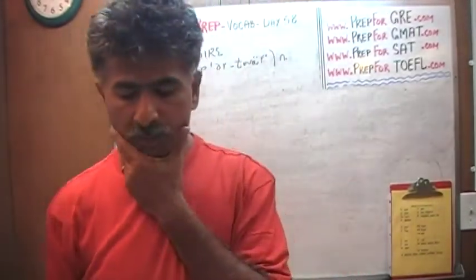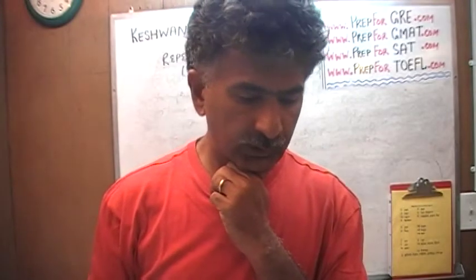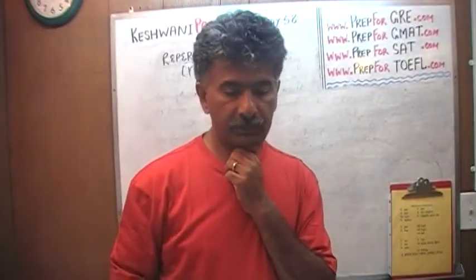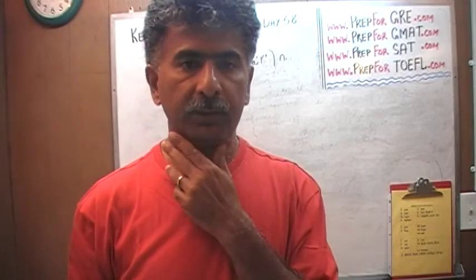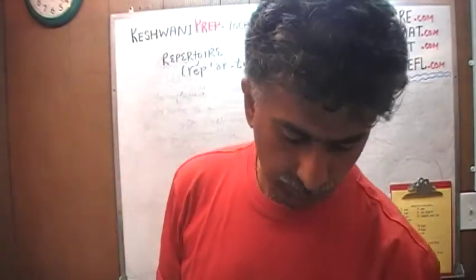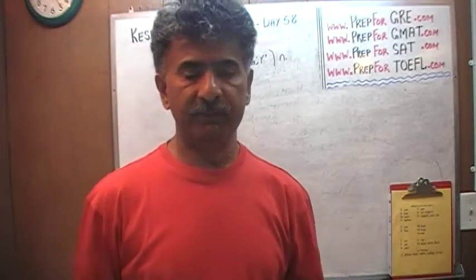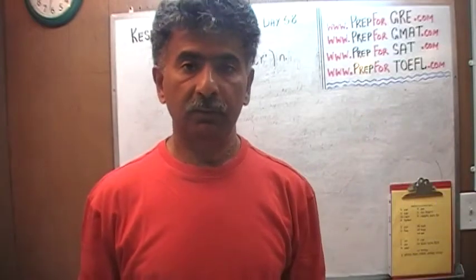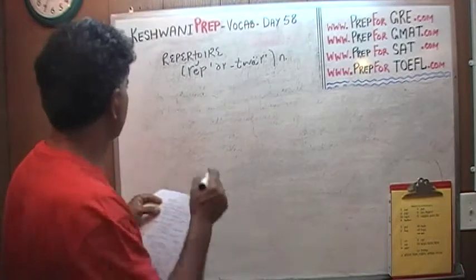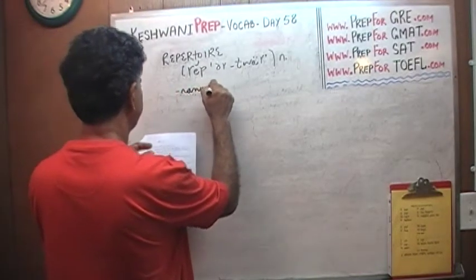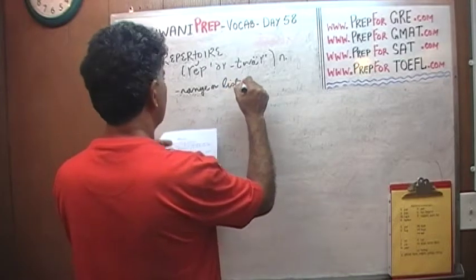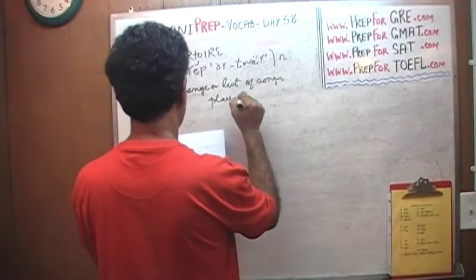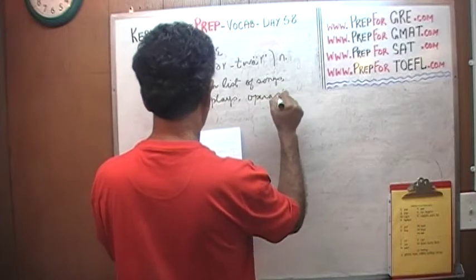Repertoire. What's a repertoire? A repertoire of an artist is a range of things that the artist can do — the songs he or she can play, the roles he can play in a musical or opera, or any kind of performance. All the things that one is able to do — that's called your repertoire. It's a range or list of songs, plays, operas, performances.